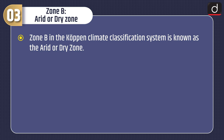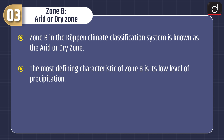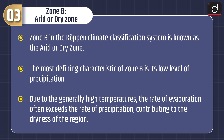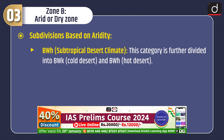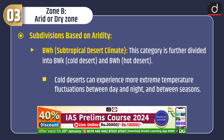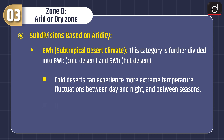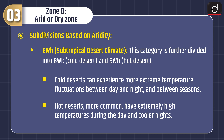Zone B in the Koppen Climate Classification System is known as the Arid or Dry Zone. The most defining characteristic of Zone B is its low level of precipitation. Due to generally high temperatures, the rate of evaporation often exceeds the rate of precipitation, contributing to the dryness of the region. Subdivisions based on aridity are BWH Subtropical Desert Climate, further divided into BWK Cold Desert and BWH Hot Desert. Cold deserts can experience more extreme temperature fluctuations between day and night and between seasons, while hot deserts have extremely high temperatures during the day and cooler nights.